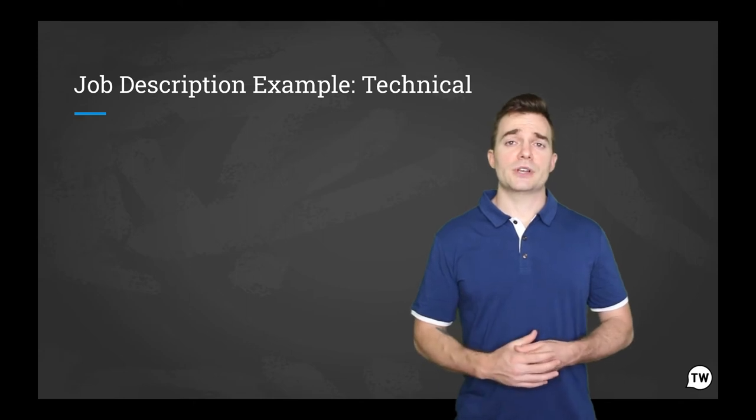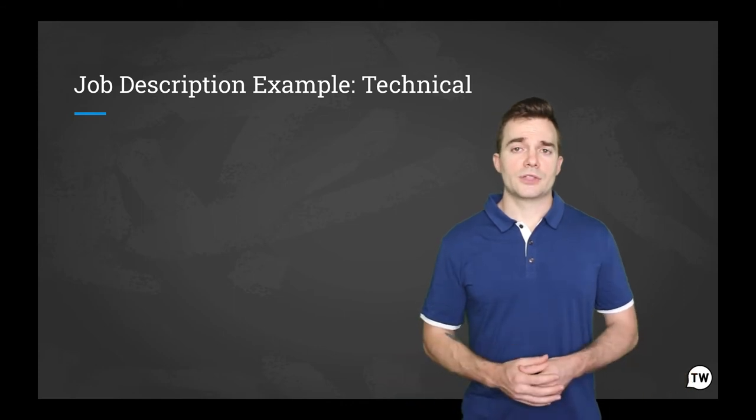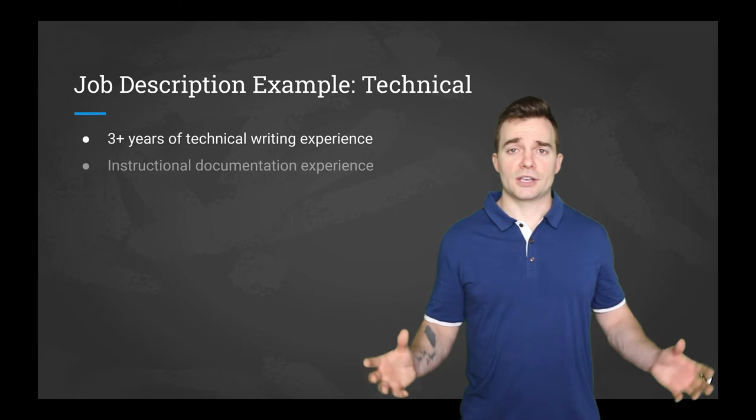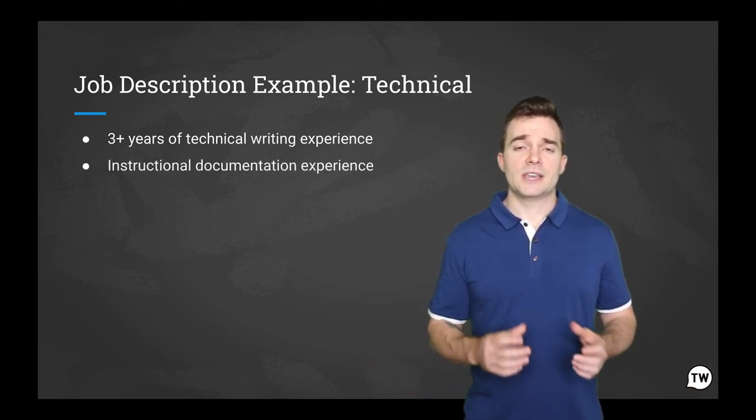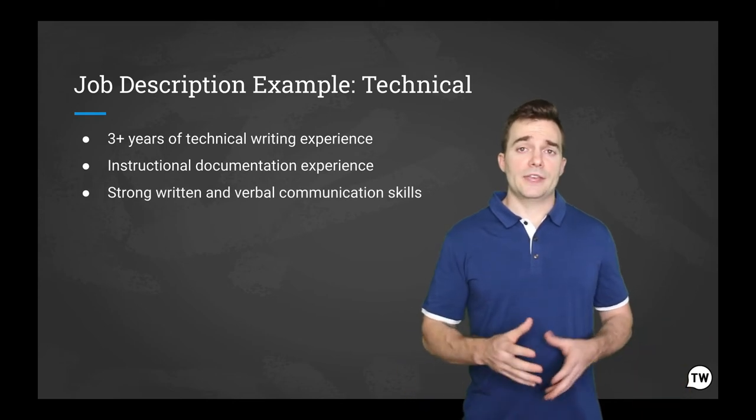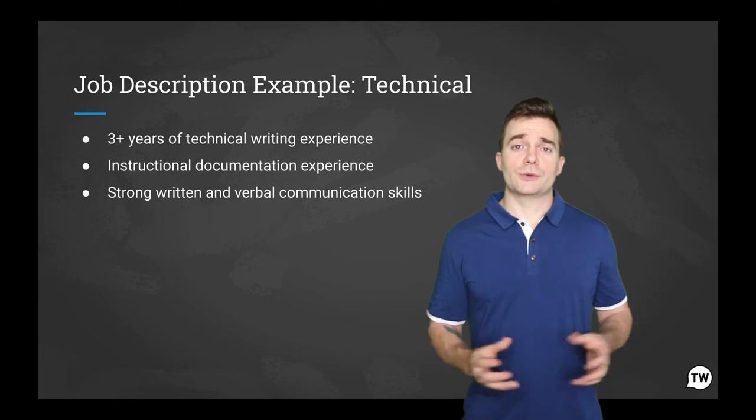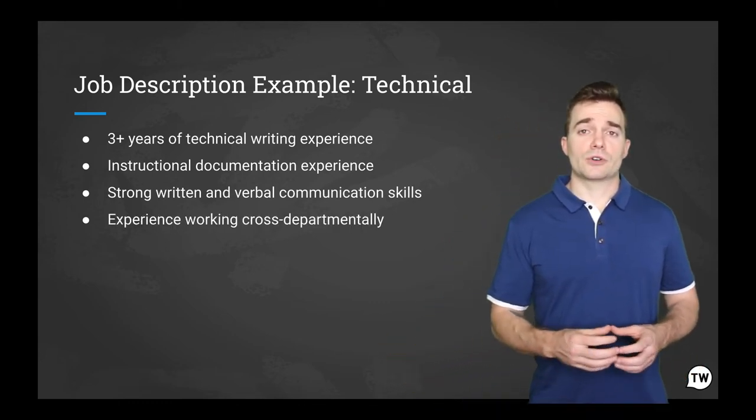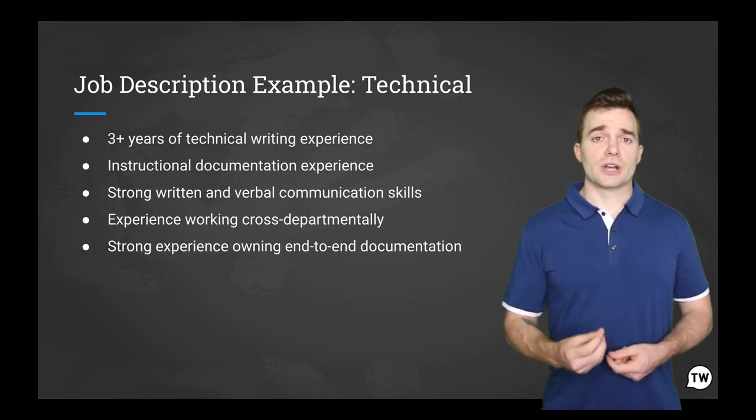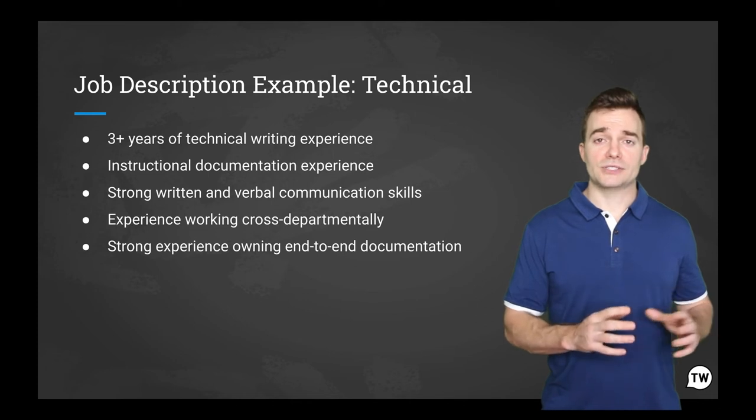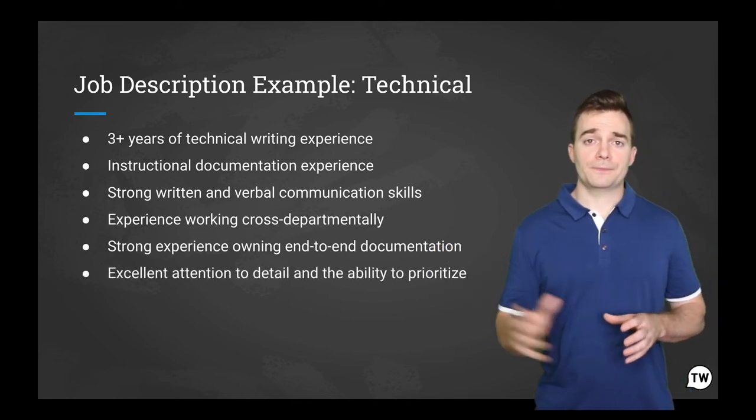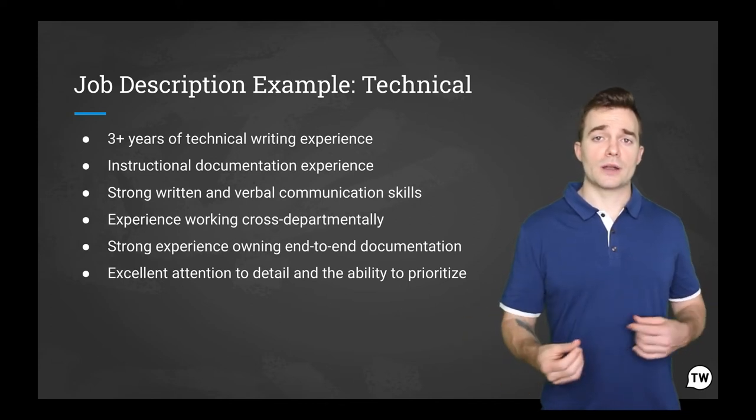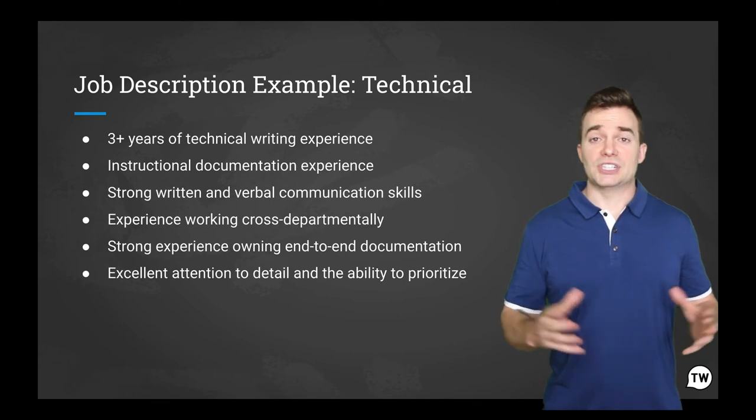Now that we have looked at a technical writer's typical roles and responsibilities, let's move to the qualifications and experience that an ideal candidate is expected to meet. The first example we'll take a look at is for a role in an online tech company. Here are some of the things you'd see in a job description. Three plus years of technical writing experience. Knowledge base documentation. If you don't know what knowledge base documentation is, make sure to go ahead and Google it. There's a lot of good information out there. And they should also have strong written and verbal communication and experience working with content in multiple mediums. Experience working cross departmentally to communicate the nuts and bolts of a product. Strong experience owning end to end documentation creation process. So all the way from creation to publishing and excellent attention to detail and the ability to prioritize and work on multiple projects in a fast paced environment and a changing environment as well.